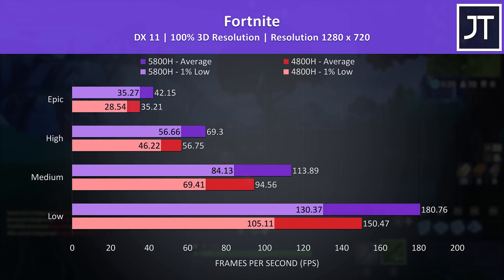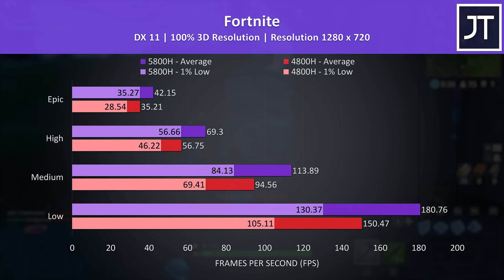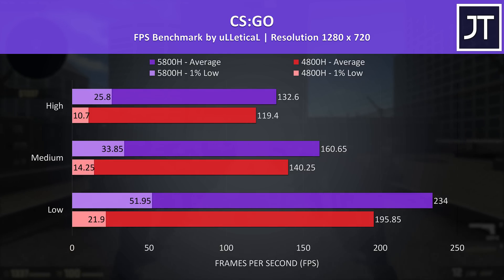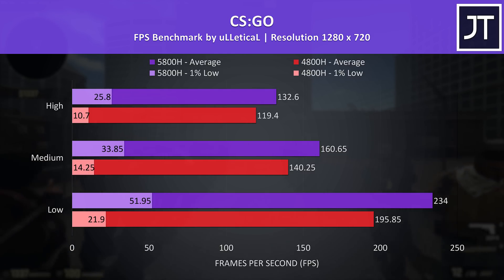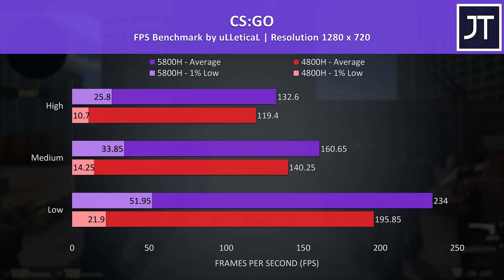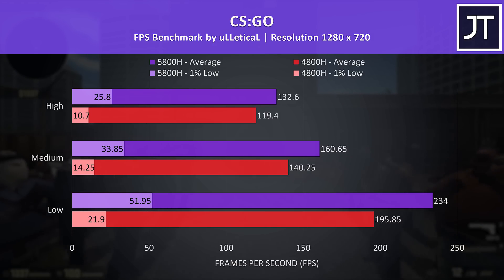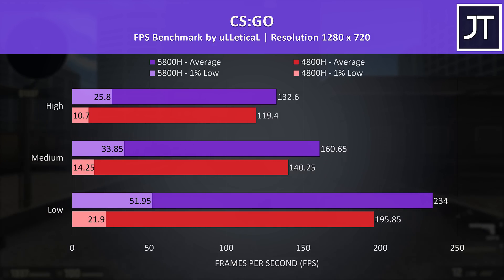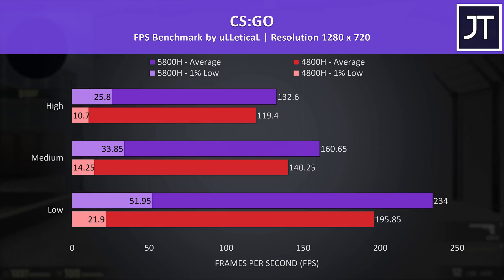In Fortnite, the 5800H was 20% faster at epic settings, and about the same margin at low settings too. CS:GO was tested with the Ulletical FPS benchmark. At minimum settings the 5800H was reaching 19% higher average FPS; however with all settings maxed out the gap lowers to an 11% lead, possibly meaning the difference between processors matters more at lower settings where we're less GPU bound.